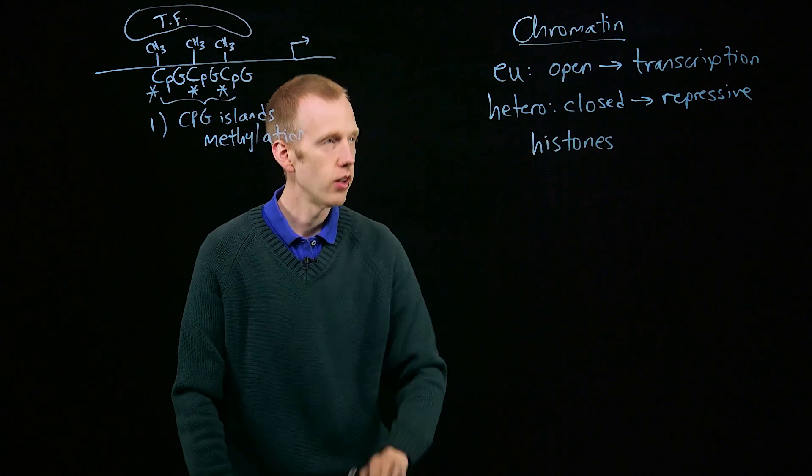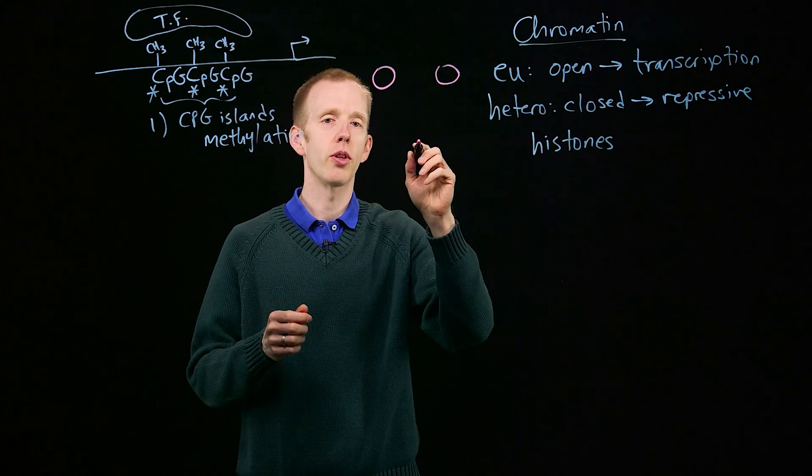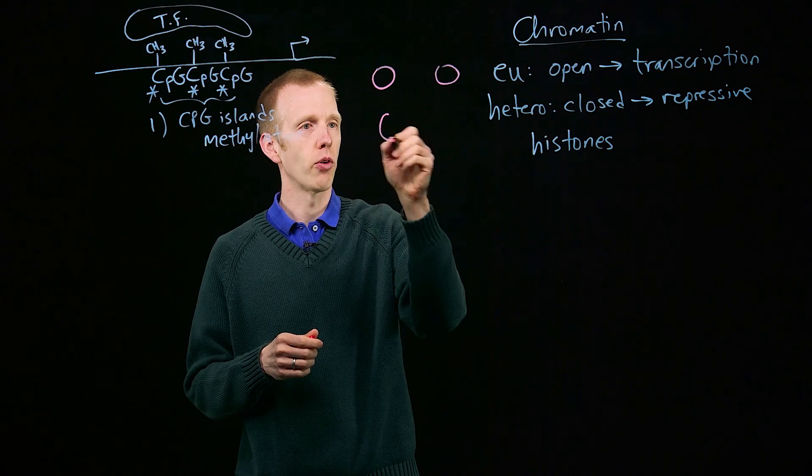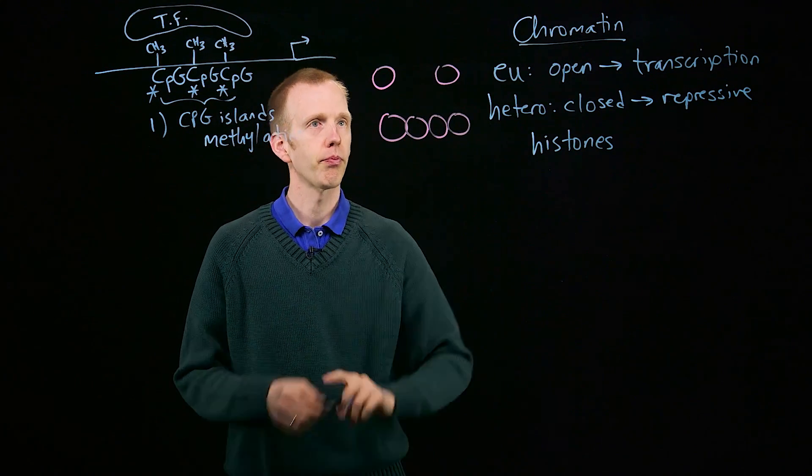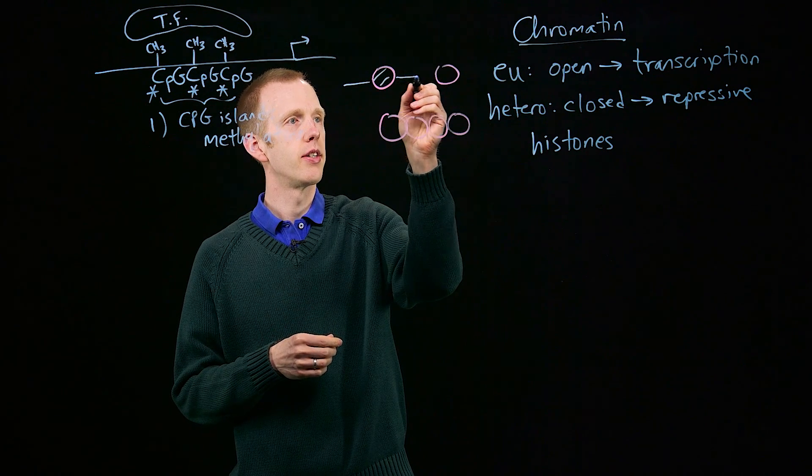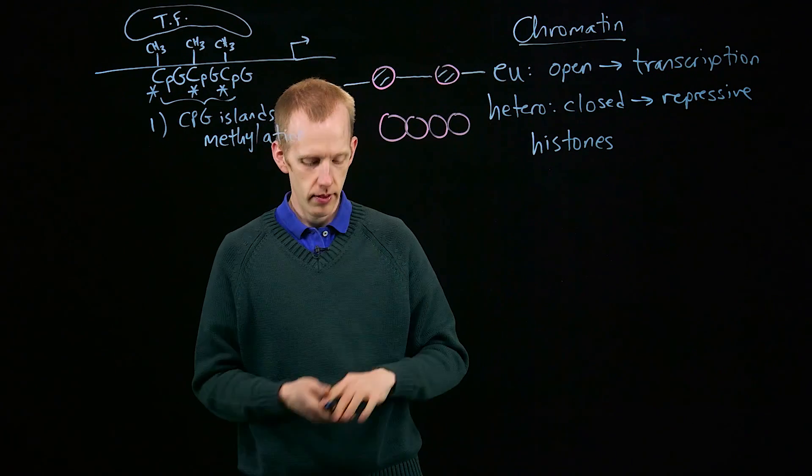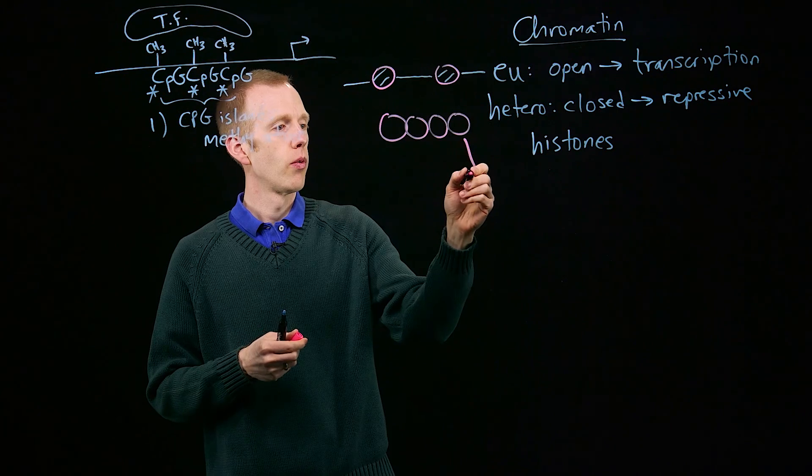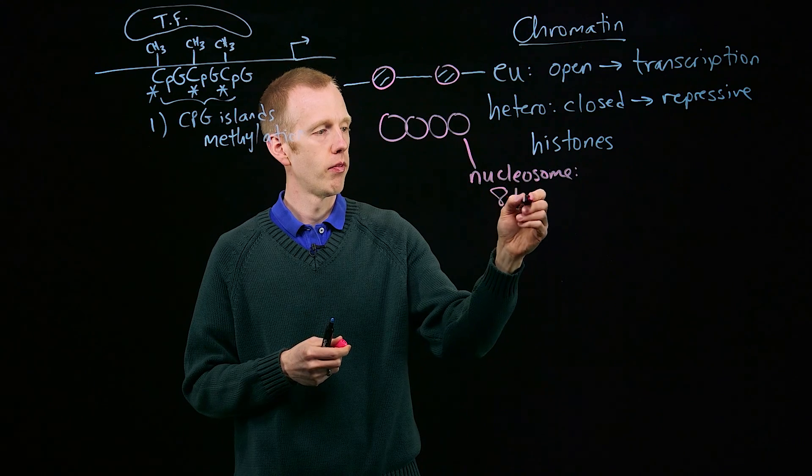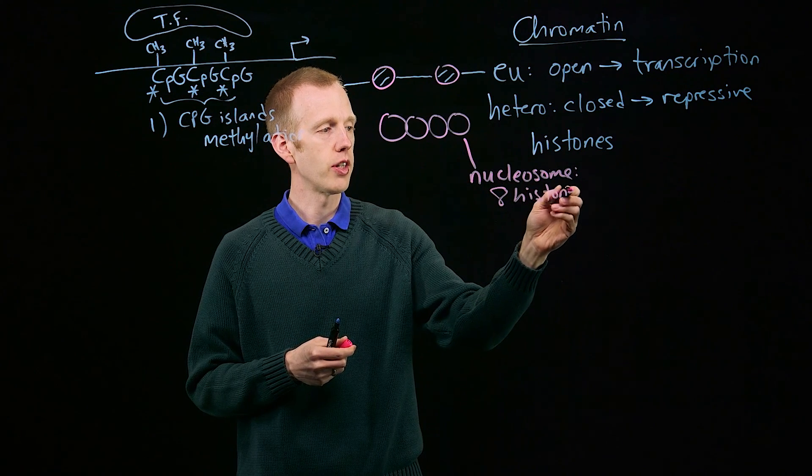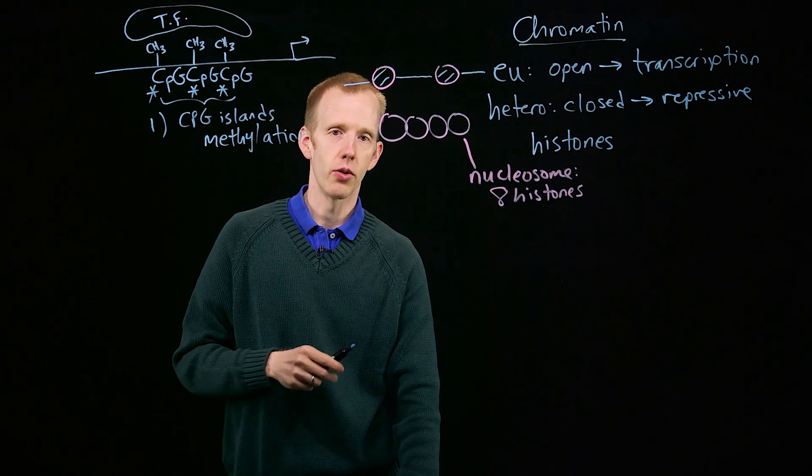So if I drew out a nucleosome structure, for example, euchromatin might have two nucleosomes that are spaced far apart, whereas heterochromatin might have four nucleosomes that are more tightly packed. So normally DNA would be wound around each nucleosome, which is made up of eight histones. Each of those histones is a single protein.